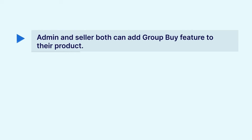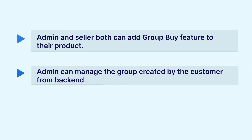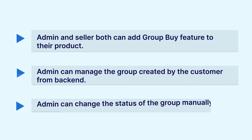The admin will also be able to add group buy features to their product and to the marketplace seller's product. The sellers can also add group buy features to their product. The admin can manage the groups created by customers from the backend and can also change the status of the group from processing to qualified, or qualified to disqualified.